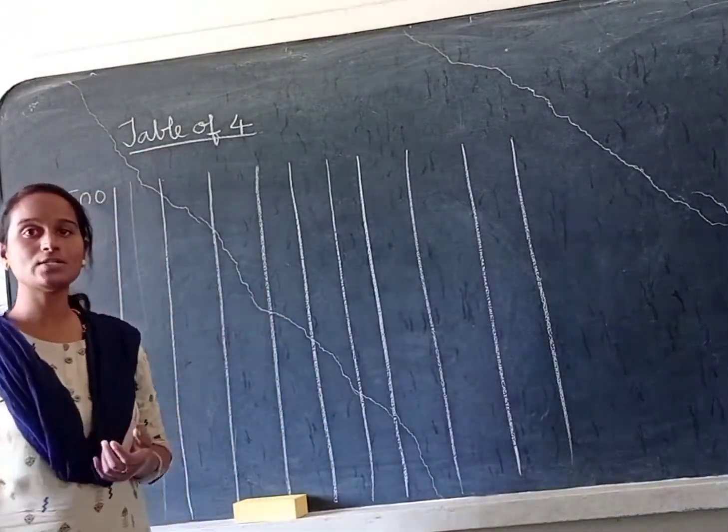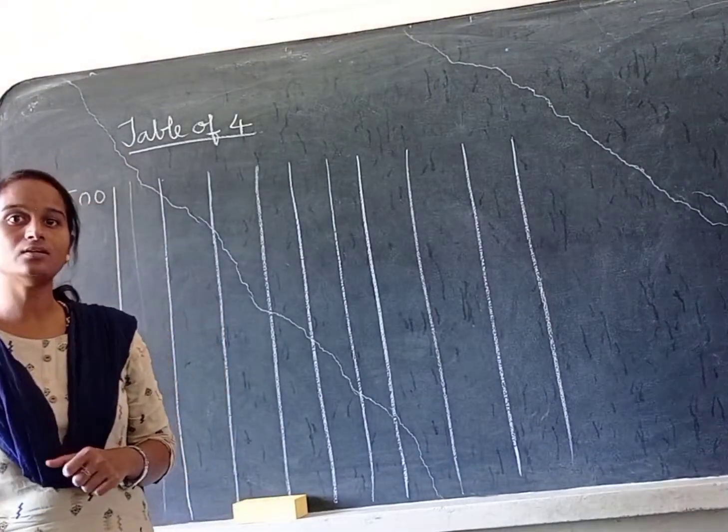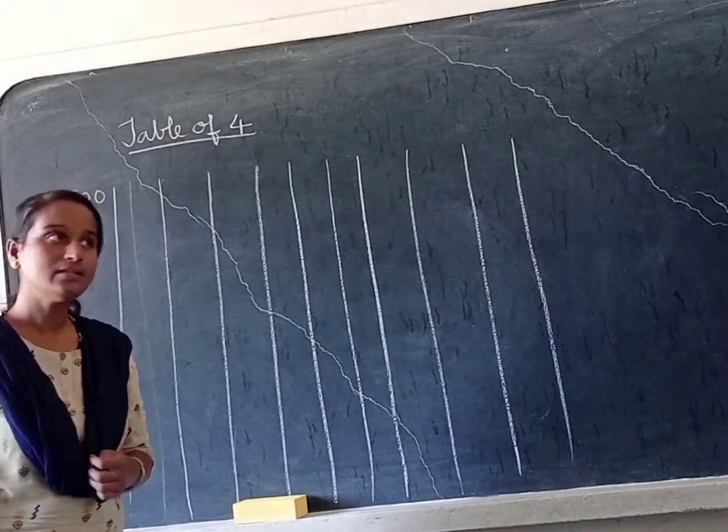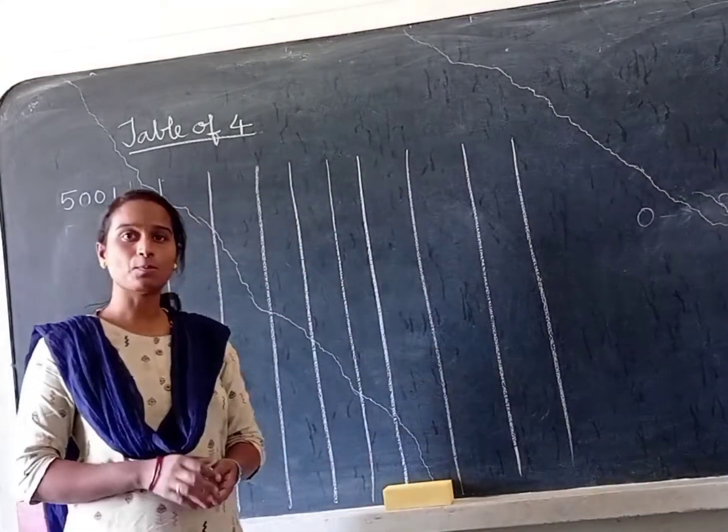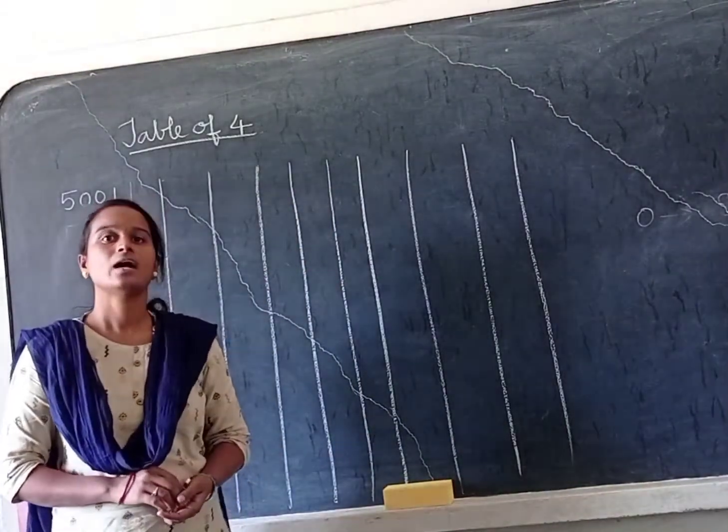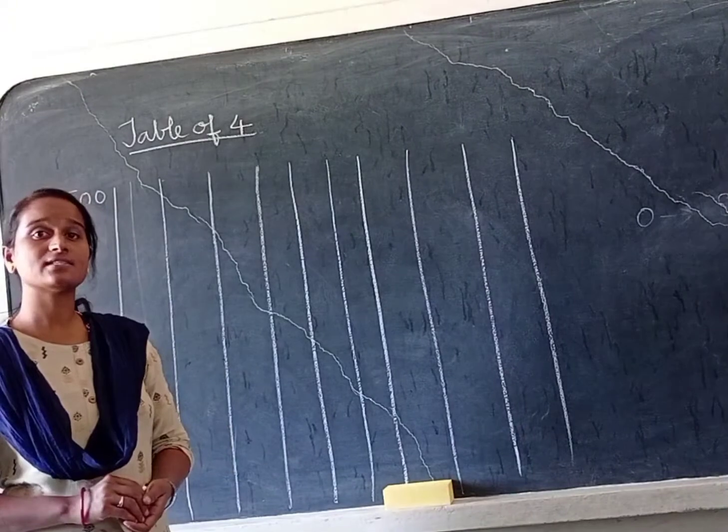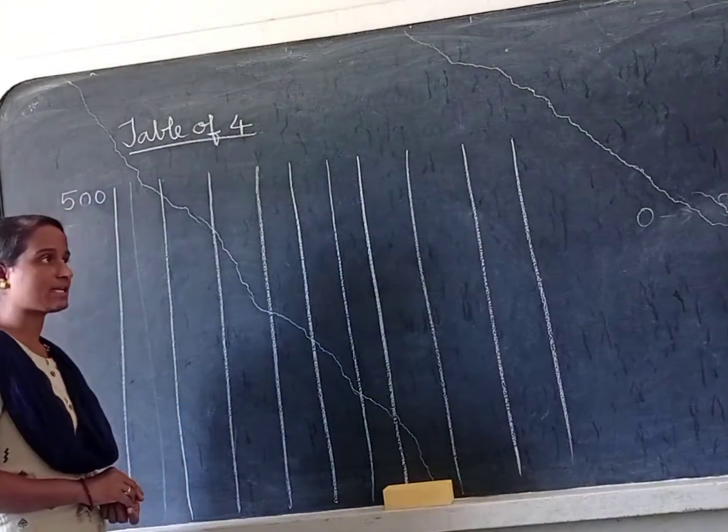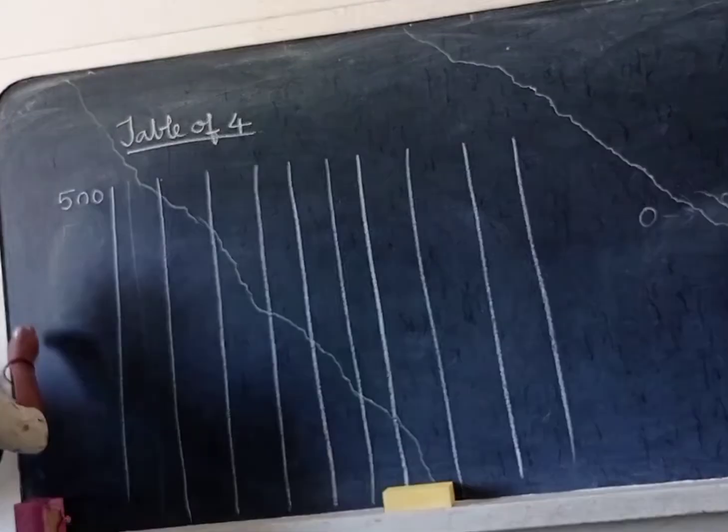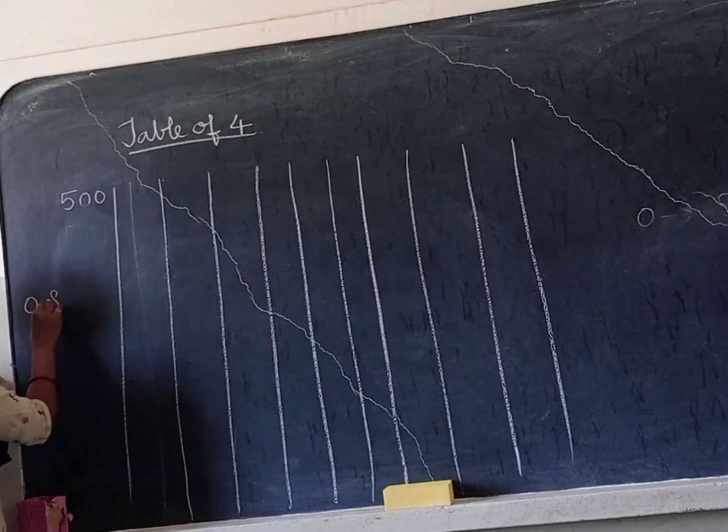We learned about single digit number, two digit number, three digit number. 0 is the smallest single digit number. 9 is the highest single digit number.